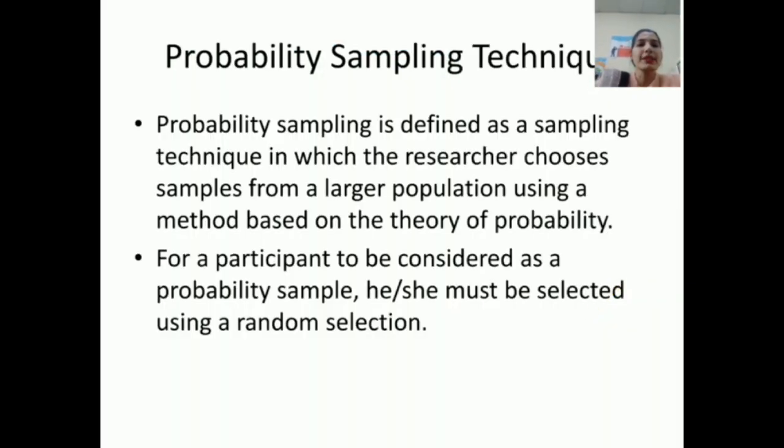First is probability sampling technique. Probability sampling is defined as a sampling technique in which the researcher chooses samples from a large population using a method based on the theory of probability. For a participant to be considered as a probability sample, he or she must be selected using a random selection.